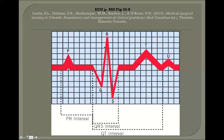Your QRS wave is your ventricles contracting — it's not really a surprise. Your ventricles are depolarizing here, releasing their energy, and then contracting. It's not really a surprise that they get the biggest wave, because look how big the ventricles are — look how much electricity must be needed to make them move.